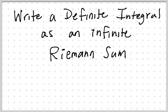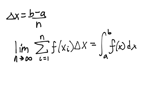In this video, we'll be using the Riemann definition of definite integral to take a given definite integral and rewrite it into an infinite Riemann sum. Recall that the Riemann definition of definite integral defines delta x as b minus a over n. Then the limit as n approaches infinity of the sum from 1 to n of f of x sub i times delta x equals the definite integral from a to b of f of x dx — the sum of infinitely many rectangles added together to give you the area under a curve.